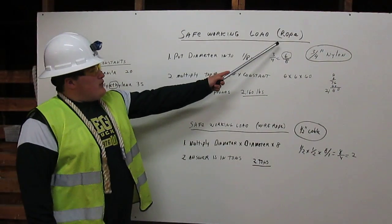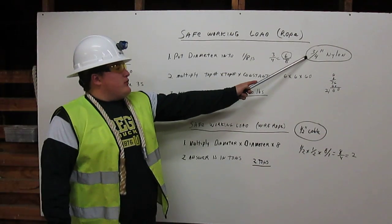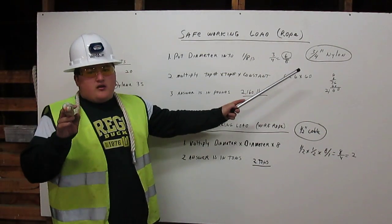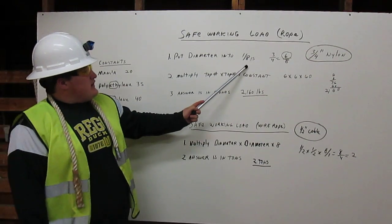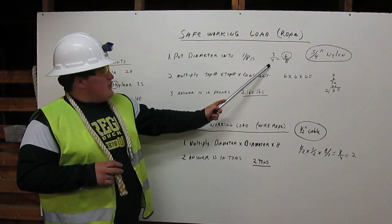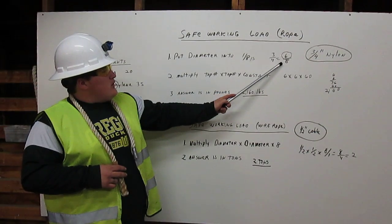Safe working load for rope. In this example, we are going to be using three-quarter inch nylon rope. First, you put the diameter into eighths. Three-quarter inch rope equals six over eight.